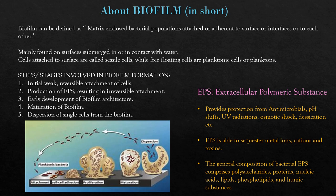Biofilm is mainly found on surfaces submerged in or in contact with water, with cells attached to the surface. As shown in the diagram, the first stage involves free-floating cells — we name these planktonic bacteria. When they attach, they start secreting the matrix, that is EPS, and that is how they start to build the biofilm. Then cell-to-cell adhesion occurs, they proliferate, the biofilm matures, and then they burst out.